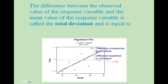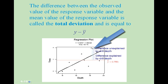The difference between the observed value of the response variable and the mean value of the response variable is called the total deviation, and is equal to y minus y-bar. In our scatter plot, the black slanted line is our regression line and the red line through the middle is the mean value of the response variable. The total deviation is the observed value minus the mean value.